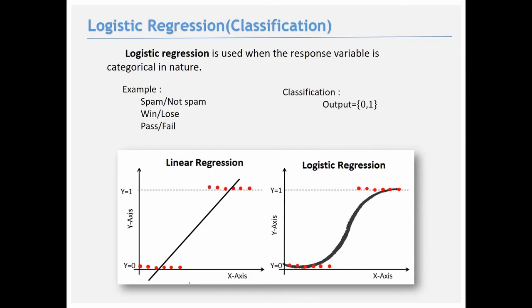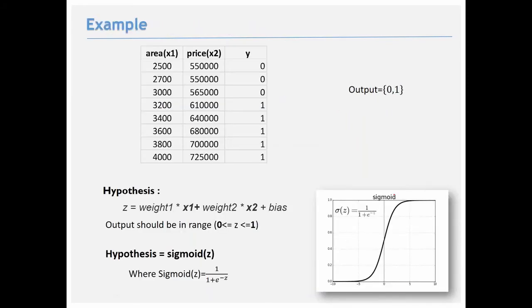Logistic regression is a classification problem — one of the two types of supervised learning. It addresses discrete outputs such as spam or not spam, win or lose, pass or fail. Outputs are binary: 0 or 1. Instead of using linear regression for classification, we use logistic regression.